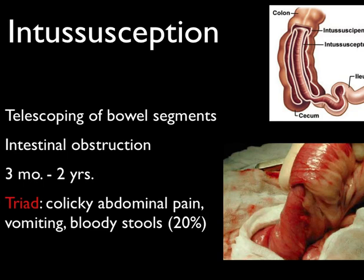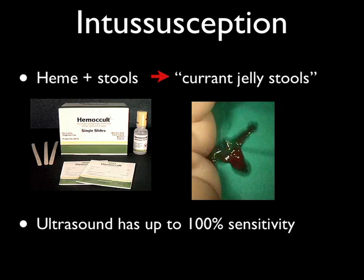Changing gears, we're going to talk about intussusception. Intussusception is where you have telescoping of the bowel segments — the intussusceptum telescopes into the intussuscipiens — causing full-blown intestinal obstruction. Patients come in with the triad of colicky abdominal pain, vomiting, and bloody stools. Unfortunately, that classic triad is only present about 20% of the time. The typical age range is three months up to two years. There is something called current jelly stools — blood plus stool that comes out looking like currant jelly. Ultrasound is very good with intussusception — it's got about 100% sensitivity to pick it up.